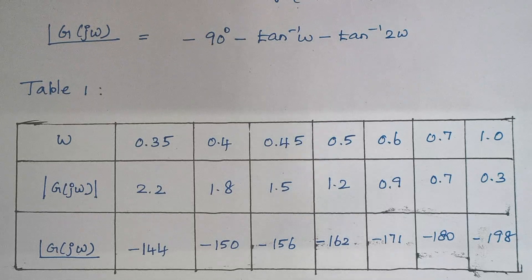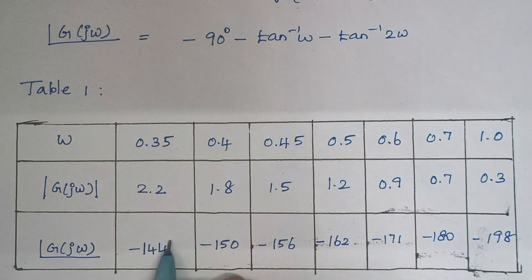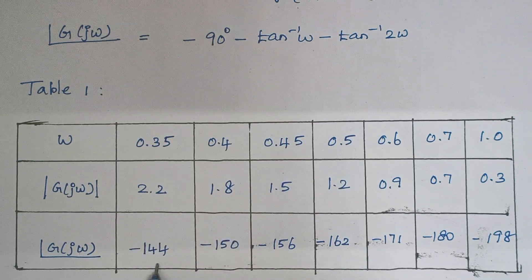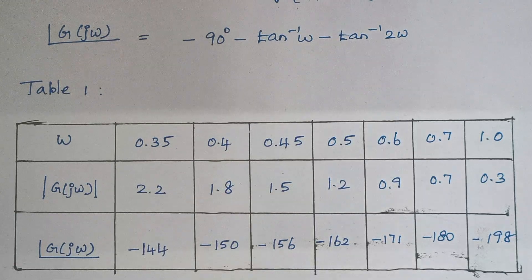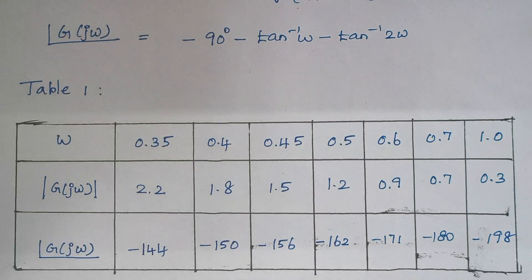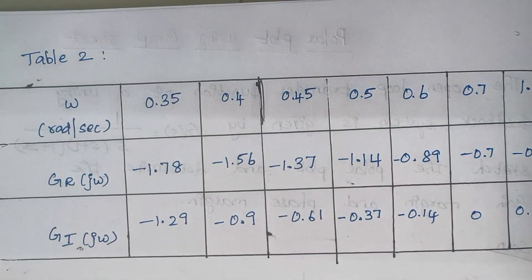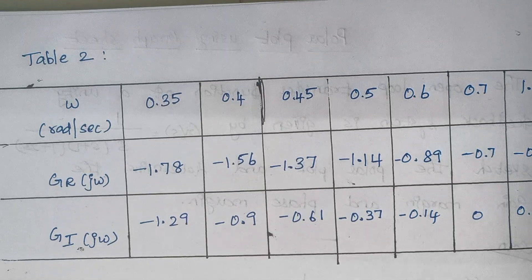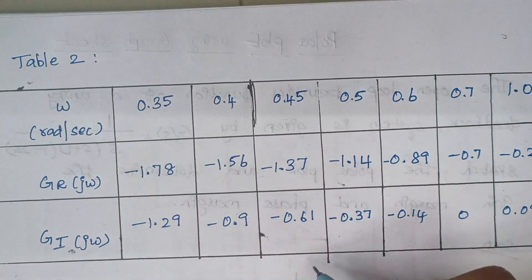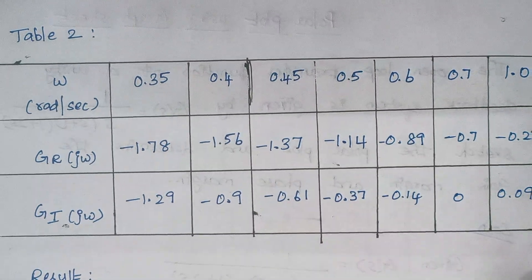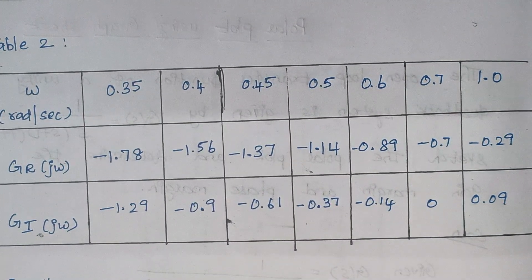To draw this on a graph sheet, the data is of polar type — that is, a magnitude along with an angle. We have to convert this from polar coordinates to rectangular coordinates, as only then can we draw the plot on a graph sheet. This conversion can be easily done using a scientific calculator. The same omega values are used, and the polar coordinates have been converted to rectangular coordinates in the table.